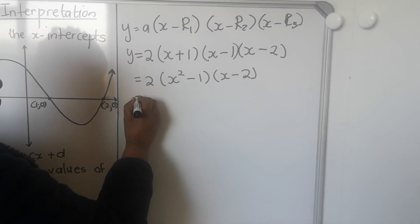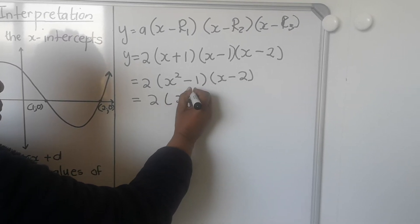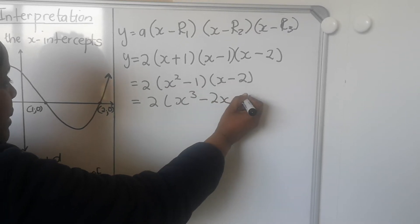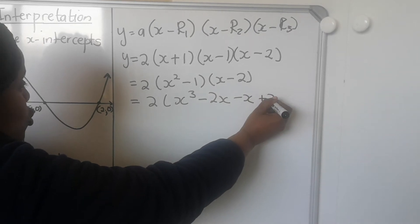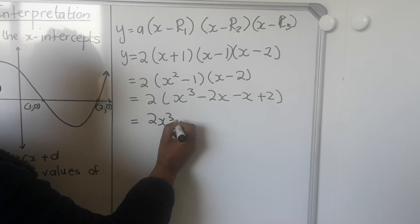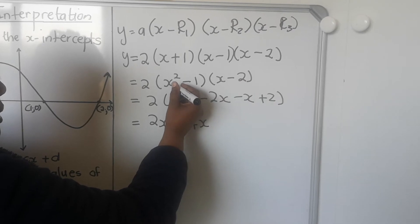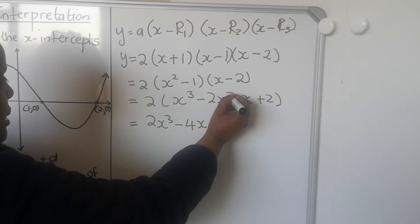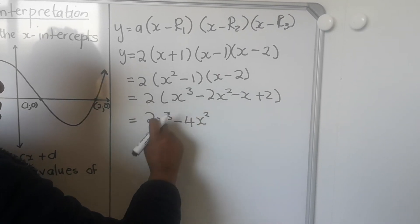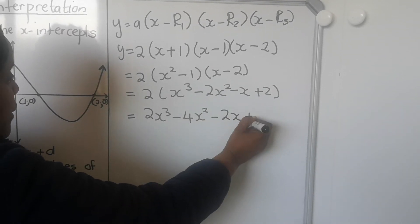Go watch it. Then after that I multiply the two brackets. x times x is x to the power 3, and x times 2 minus 2x. That and that is minus x, and that and that is plus 2. Then multiply with a 2. We get 2x cubed minus 4x squared, then minus 2x, then plus 4.